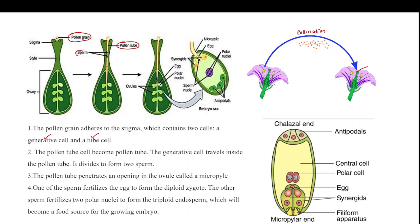The generative cell divides into two sperm cells, and these two sperm cells move towards the ovule via the pollen tube. They enter inside the ovule through the micropylar end.